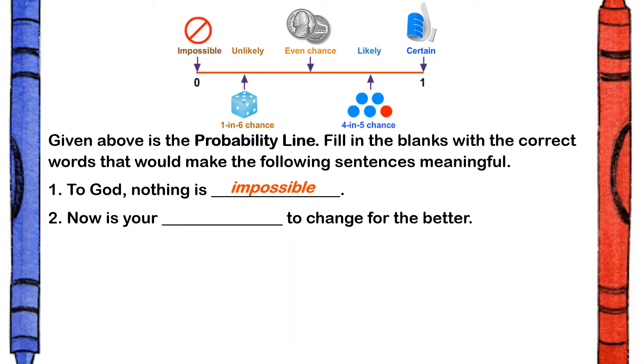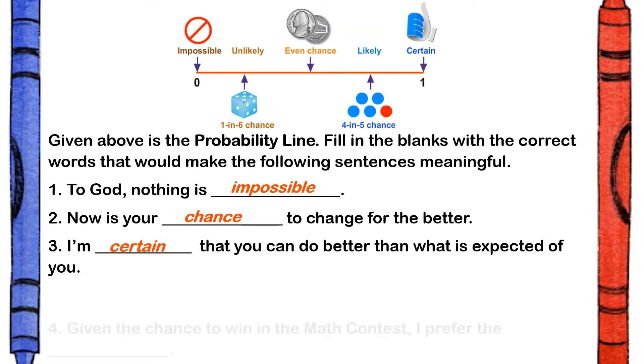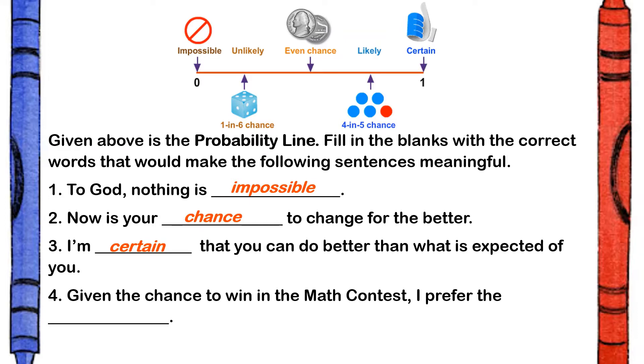Number two, Now is your blank to change for the better. It is chance. Now is your chance to change for the better. Number three, I'm blank that you can do better what is expected of you. I'm certain.